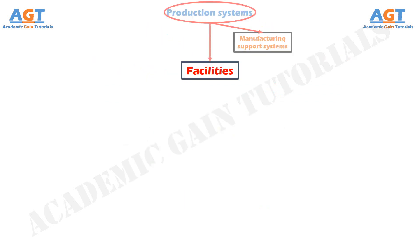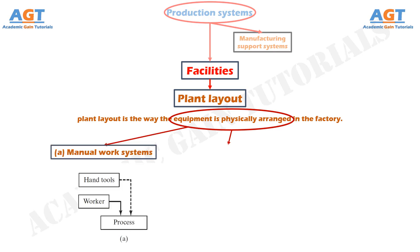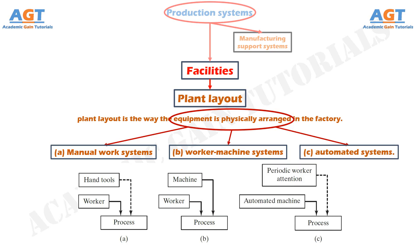The facilities in the production system consist of the factory, production machines and tooling, material handling equipment, inspection equipment, and computer systems that control the manufacturing operations. Facilities also include the plant layout, which is the way the equipment is physically arranged in the factory. The equipment is usually organized into manufacturing systems — logical groupings of equipment and workers that accomplish the processing and assembly operations on parts and products made by the factory. Manufacturing systems can be individual work cells consisting of a single production machine and a worker, or more complex systems such as a production line. The manufacturing systems come in direct physical contact with the parts and assemblies being made — they touch the product.